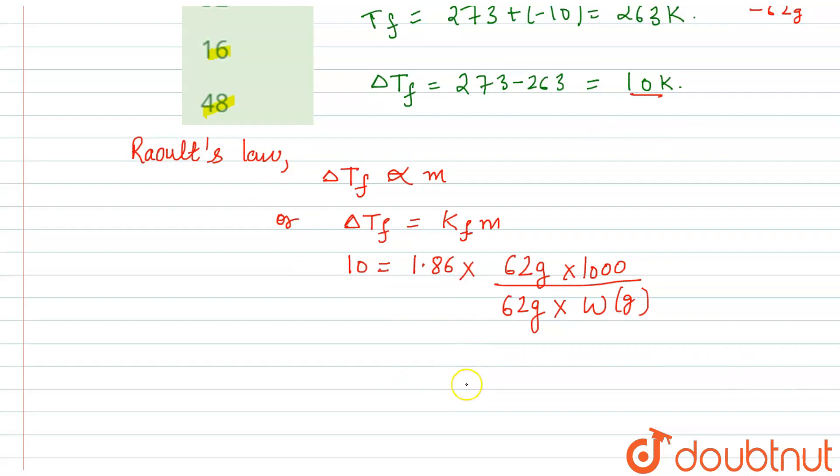Now we will calculate this value. So this comes out to be W is equals to 186 grams, so this is the weight of solvent.